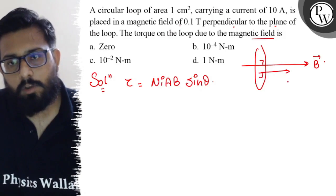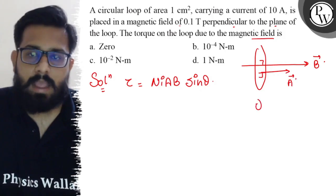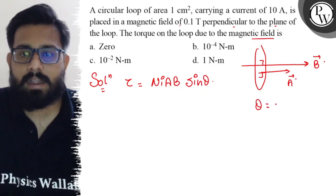Also, you can see the area vector is also perpendicular to the plane of the loop. So here the angle between area vector and the magnetic field comes out to be 0 degrees.